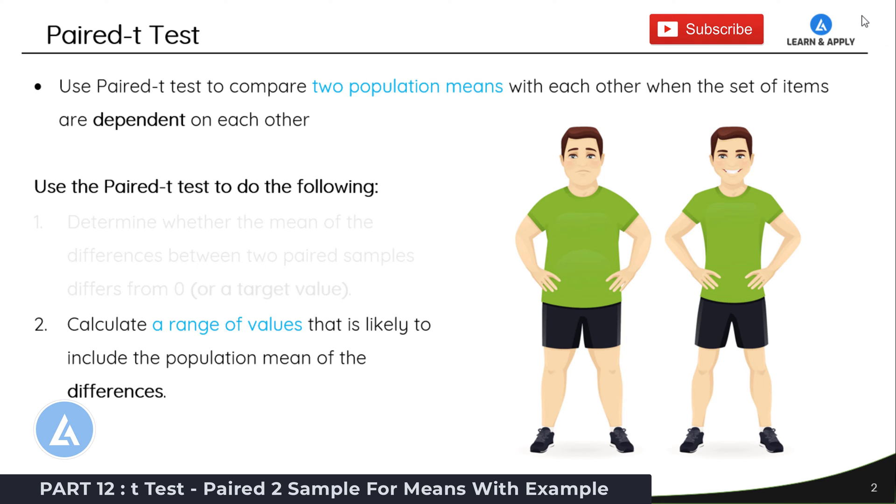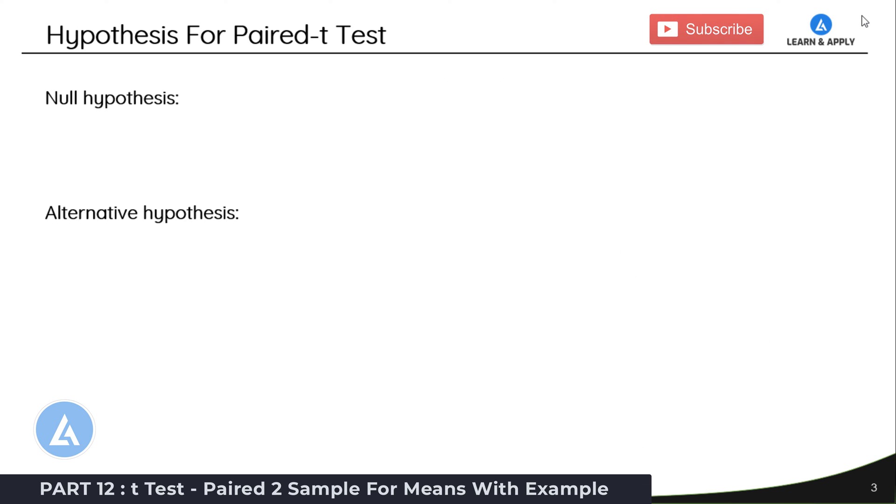As this is part of hypothesis testing, let's understand what is the null hypothesis and alternative hypothesis in case of this Paired t-Test. The null hypothesis is H0: μ1 equals μ2. That means the population mean before is equal to the population mean after, or the population means for the data that we have collected in pairs are equal.